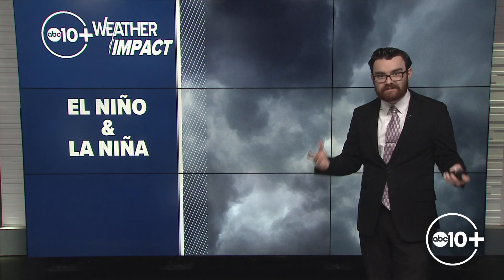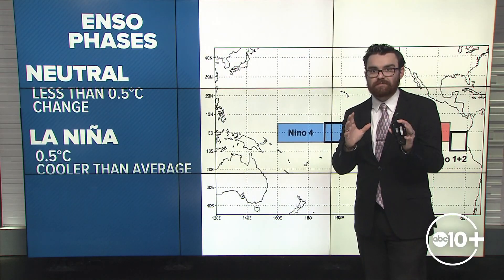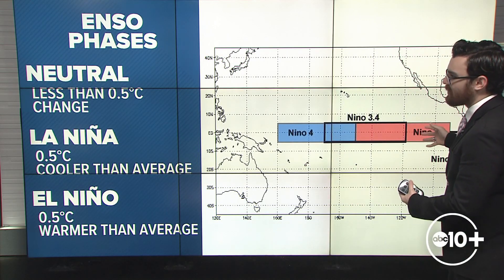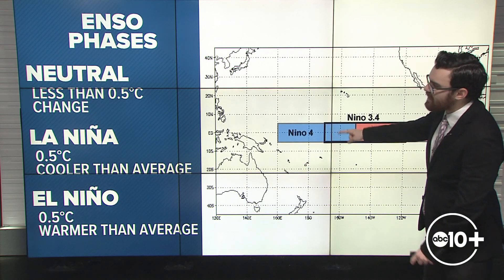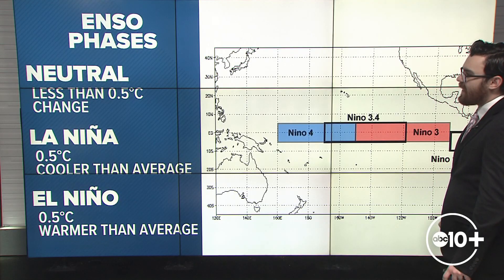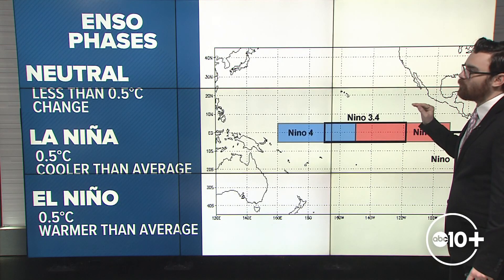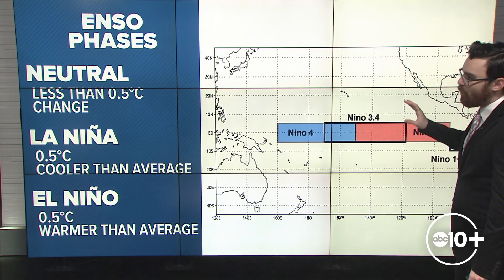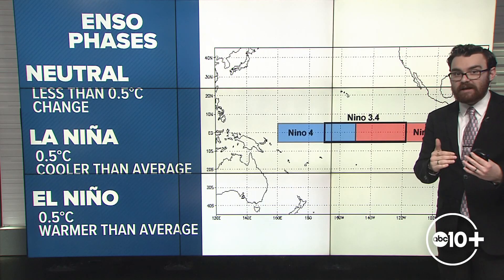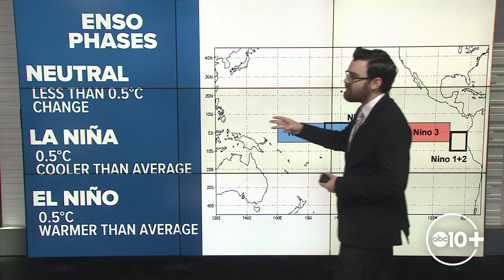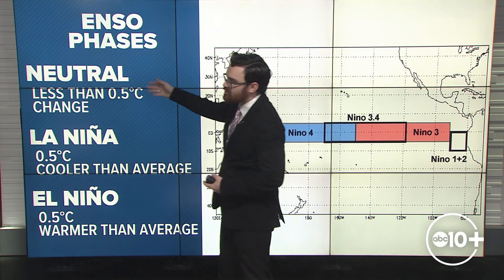But instead of doing a seasonal forecast on El Niño and La Niña, let's talk about exactly what those are, the differences between the two, and some common misconceptions. I'm going to start with a map here. This area of the equatorial Pacific is called the Nino 3.4, and this is the area that we look at most to determine whether the conditions we are in is currently neutral, La Niña, or El Niño. So there are three phases.